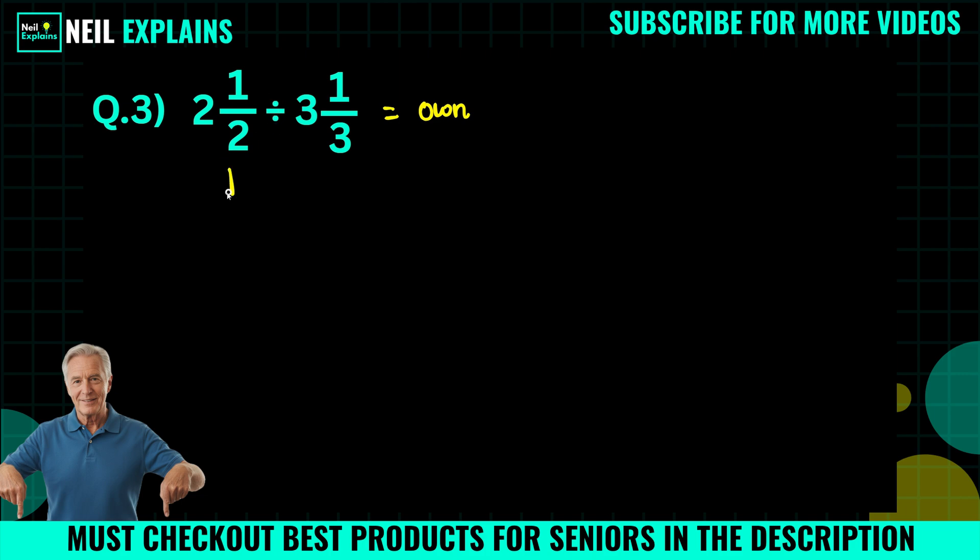So we will put this in the simplest form. And next we will divide. Two times one by two is what? Two times two, that is what? Four plus one divided by two, or you can say five by two.